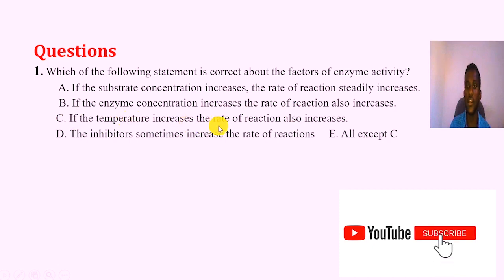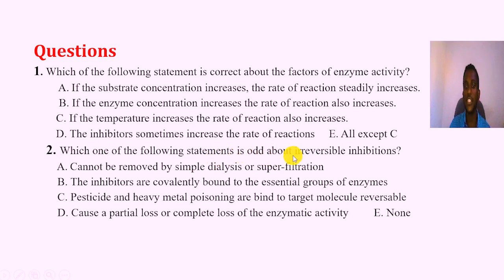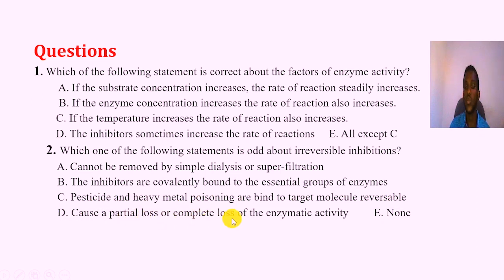If the temperature increases, the rate of reaction also increases. Inhibitors sometimes increase the rate of reaction — all except C. Which one of the following statements is true about irreversible inhibition? A: Cannot be removed by simple dialysis or superfiltration. B: The inhibitors are covalently bound to the essential groups of enzyme. C: Pesticide and heavy metal poisonings are examples of inhibitors that bind to target molecules reversibly. D: Causes partial or complete loss of enzyme activity. E: None.